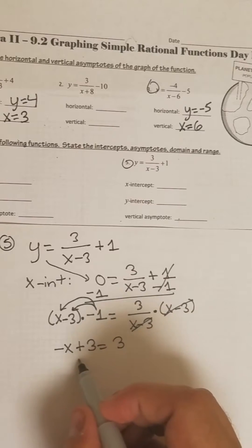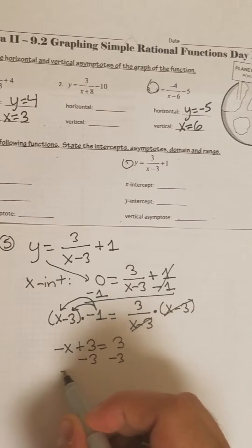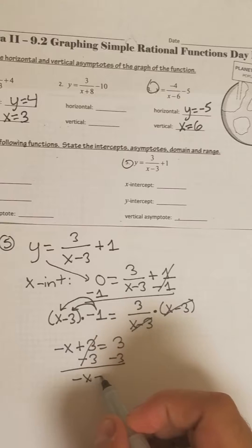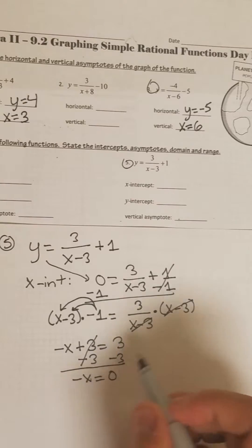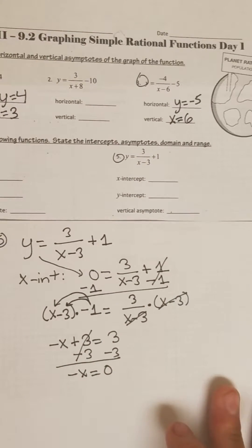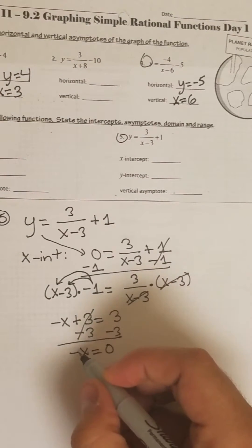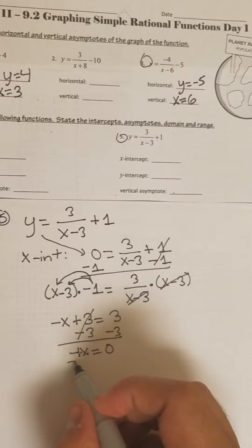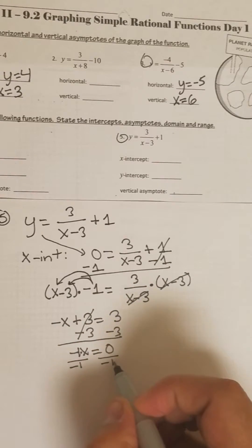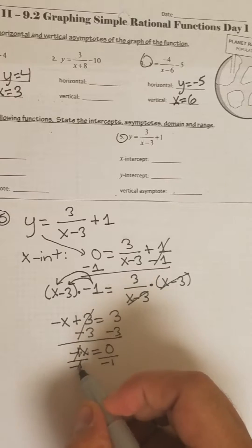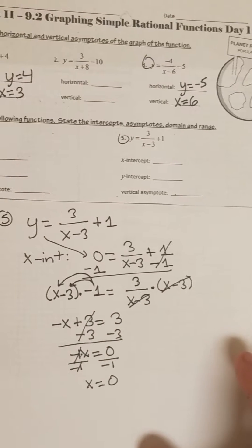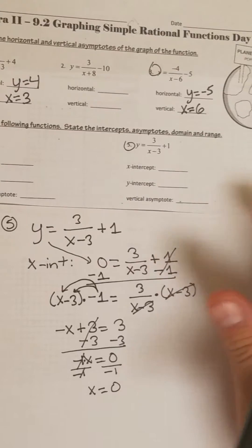So I have negative x and then I have plus 3, and then I have a 3 left over because it's cancelled. We're going to go ahead and solve this — move the 3 over by subtracting it. So negative x equals 0. There's an invisible negative 1 here multiplying, so we've got to divide it off. So we've got x equals 0 — that's our x-intercept.